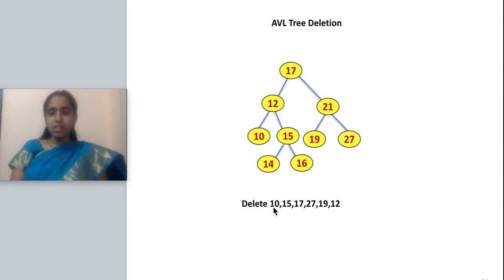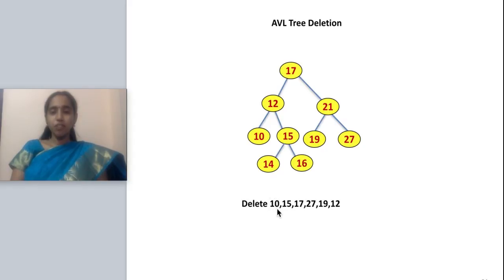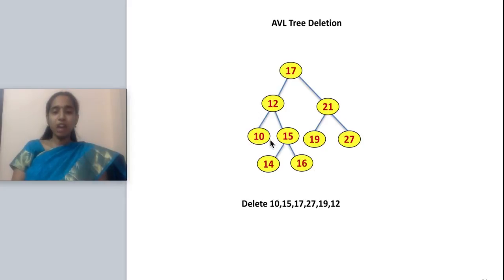The question is: delete 10, 15, 17, 27, 19, and 12 from this AVL tree. The strategy is: first perform binary search tree deletion, then calculate the balance factor for all nodes, and if it is not satisfied, perform rotation.